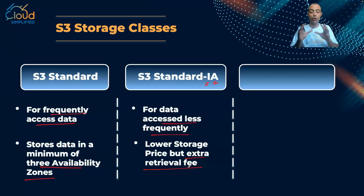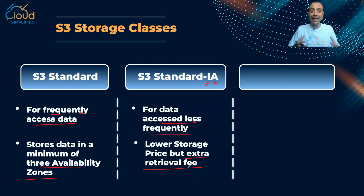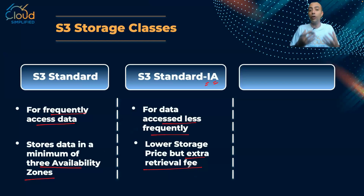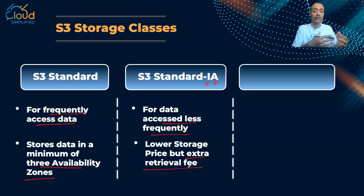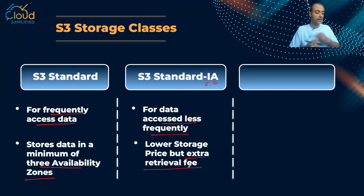In general, you put objects that are frequently accessed into S3 Standard, and then for the kind of objects that over time are not accessed as frequently, you can simply move them to Standard-IA.